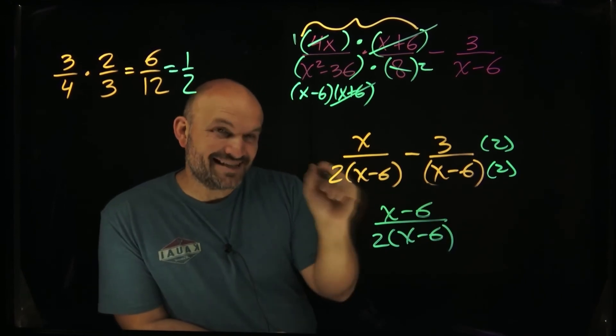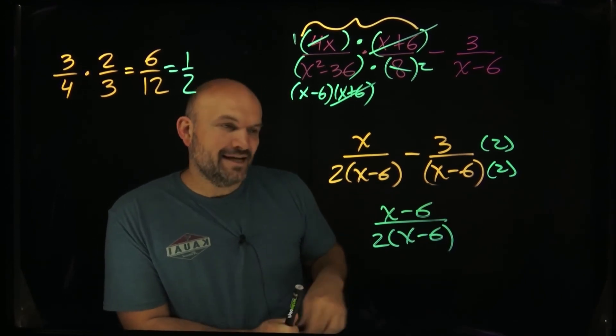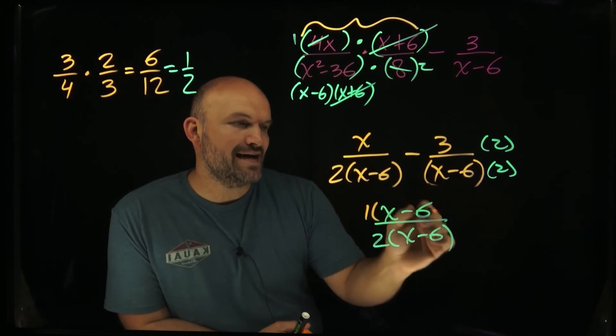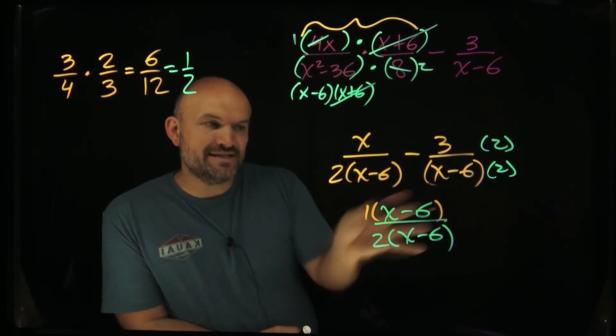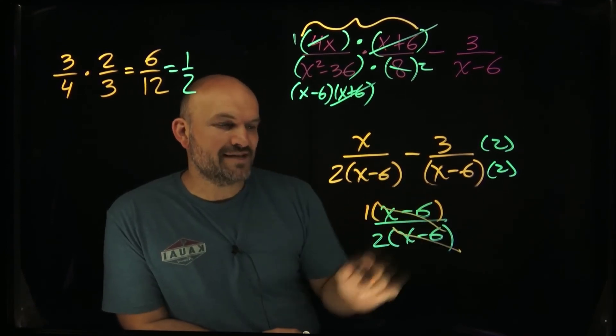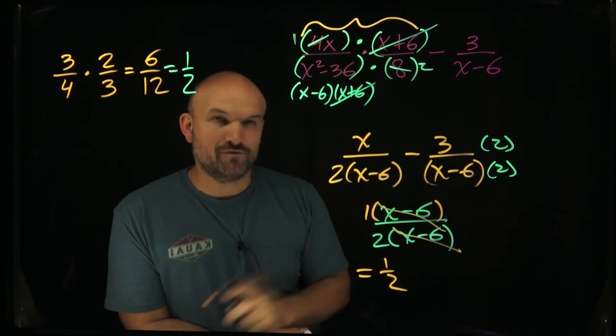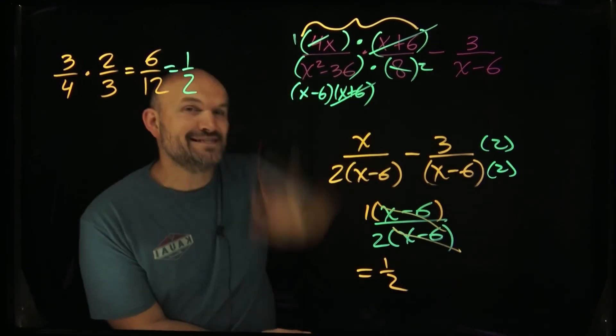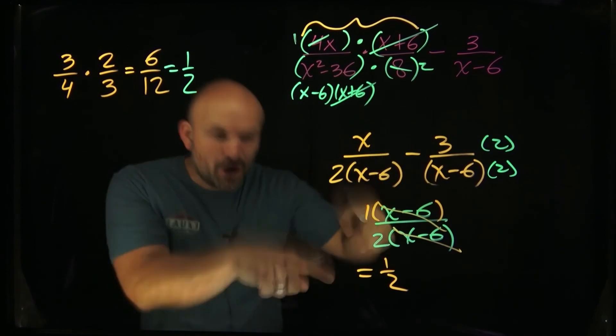Again, you recognize here I technically can go ahead and rewrite this as 1 times x minus 6. Now you can see my x minus 6s are going to divide out. And I'm just going to be left with a final answer of 1 half. So I took this whole crazy expression and I reduced it all the way down to 1 half.